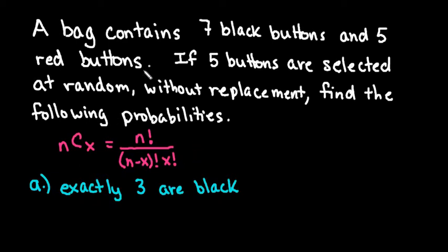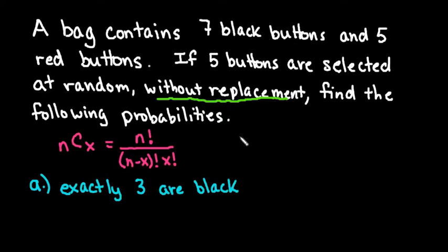So with this, what we have is a bag contains seven black buttons and five red buttons. If five buttons are selected at random without replacement — this is the key word right here, the without replacement — that means that your probability of success changes every time you draw something, because on the first draw you have 12 total buttons. I got that because I added the seven and the five together.